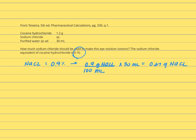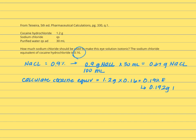The next thing that we need to do is calculate the amount of sodium chloride osmotically equivalent to cocaine hydrochloride. This is as simple as multiplying the amount of cocaine hydrochloride by the sodium chloride equivalent. So that is 1.2 grams times 0.16, which equals 0.192 equivalents — equal to 0.192 grams of sodium chloride.